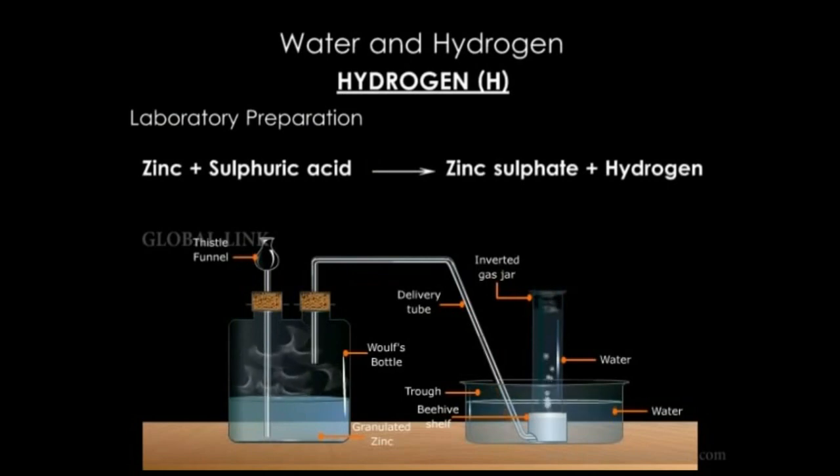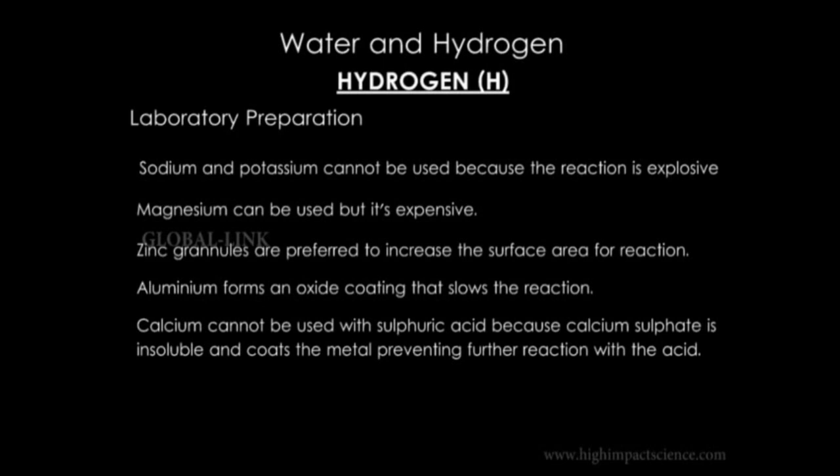Metals react with dilute acids to form salt and hydrogen. Sodium and potassium should not be used because the reaction will be explosive. Magnesium can be used but it's expensive. We use zinc granules instead of zinc powder to increase the surface area for reaction.